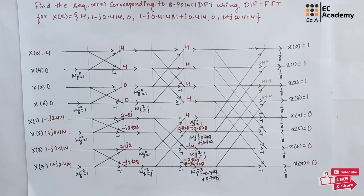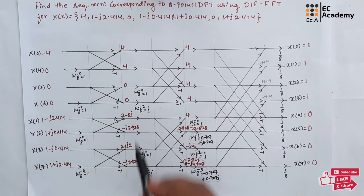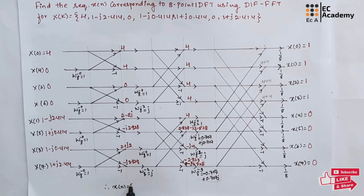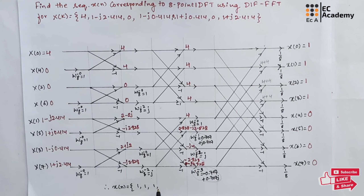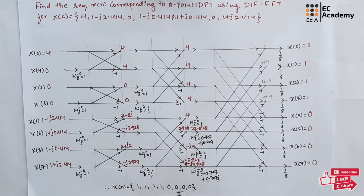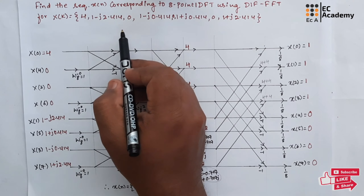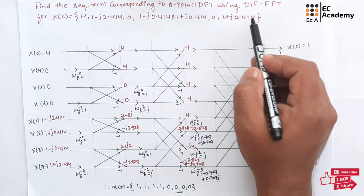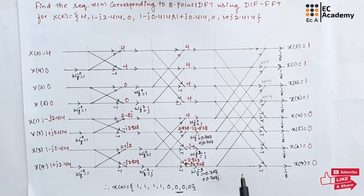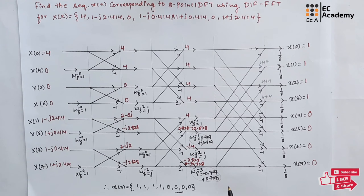Finally, we can write the IDFT of the given sequence x of k: x of n is given as 1, 1, 1, 1, 1, 0, 0, 0. This is the IDFT for the given sequence x of k. This is about the problem to find IDFT using DIF FFT. Hope you have understood the topic. Thank you.